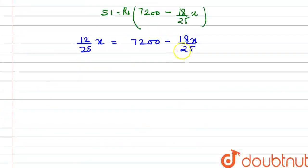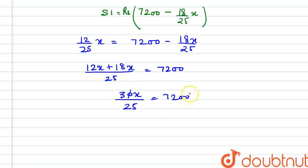So, we have to add 18x by 25 to the left hand side. So, 12x plus 18x divided by 25 is equal to 7,200. So here x and x will cancel out, and if we divide from 720, and 240 into 25, so x value will come here.